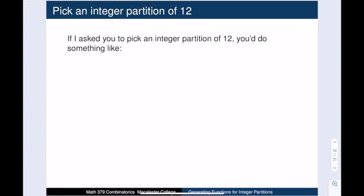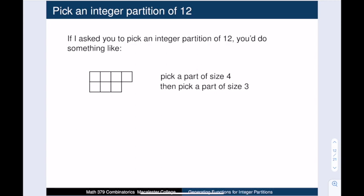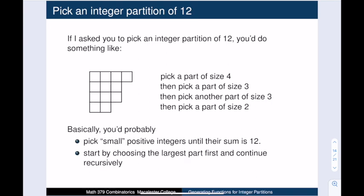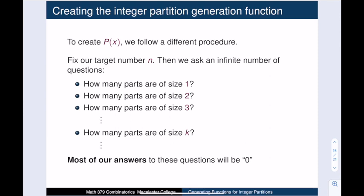Suppose you want to find an integer partition of 12. You might pick a part of size 4, then size 3, then size 3, and finish with size 2 — picking your largest number first and keeping track of the sum. We will follow a different procedure: fix the target n and ask an infinite series of questions — how many parts of size 1 are there? How many parts of size 2? How many parts of size 3? — noting that all but finitely many answers will be zero.